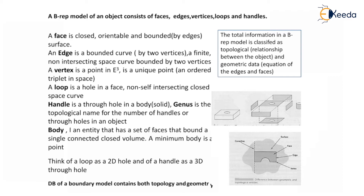A body is an entity that has a set of faces bounding a single connected closed volume; a minimum body is a point. Think of a loop as a 2D hole and a handle as a 3D through hole.